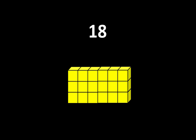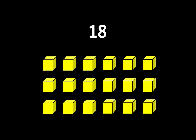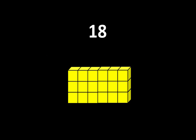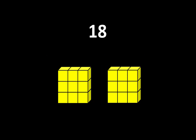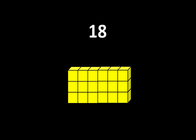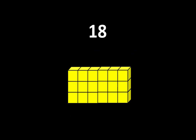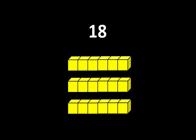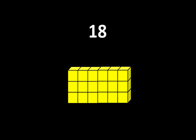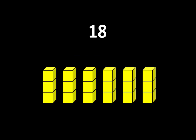What about 18? We can think of 18 as 1 group of 18 or 18 groups of 1. We can also think of 18 as 2 groups of 9 or 9 groups of 2. We can also think of 18 as 3 groups of 6 or 6 groups of 3.